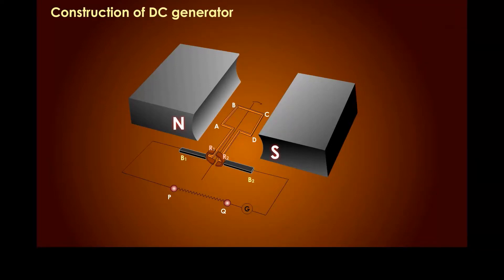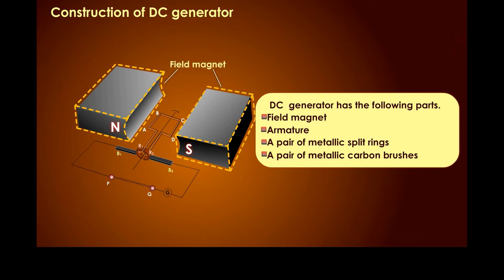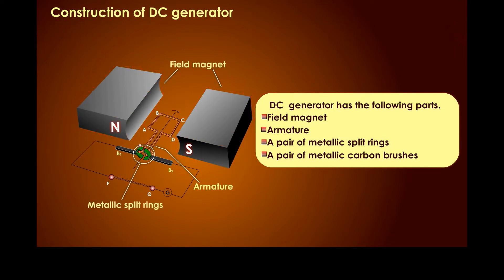Construction of DC generator. A DC generator has the following parts: field magnet, armature, a pair of metallic split rings, and a pair of metallic carbon brushes.